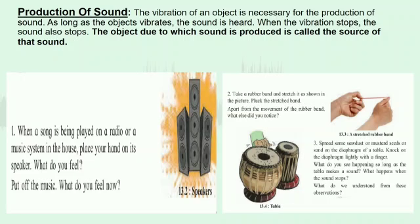Spread some sawdust or mustard seeds on the diaphragm of the tabla. Knock on the diaphragm lightly with a finger. What do you see happening? So long as the tabla makes a sound, what happens when the sound stops? The objects that produce sound — the diaphragm of the speaker, the rubber band, and the diaphragm of the tabla — show a certain movement. They oscillate rapidly; in other words, they vibrate. As long as the object vibrates, the sound is heard. When the vibrations stop, the sound also stops.